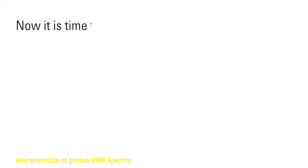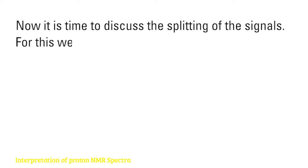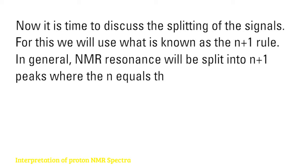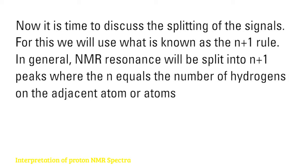Now it is time to discuss the splitting of the signals. For this, we will use what is known as the n plus 1 rule. In general, NMR resonance will be split into n plus 1 peaks where the n equals the number of hydrogens on the adjacent atom or atoms.